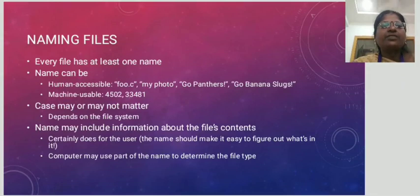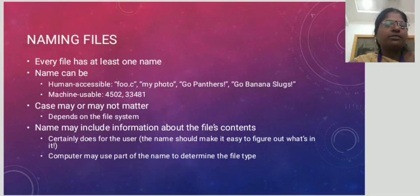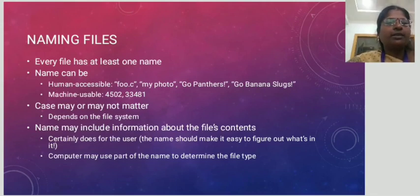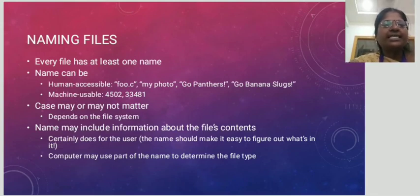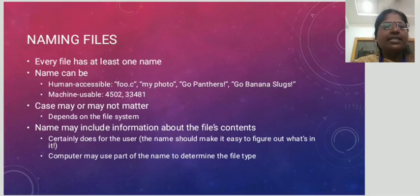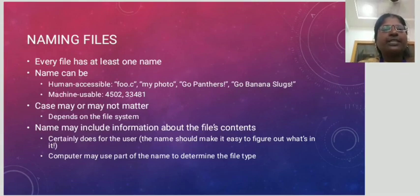Naming files: every file has at least one name. The name can be human accessible or machine accessible. Human accessible names include things like 'my file', 'first_program.c', or 'myfile.documents'. Machine usable names are numbers. Case may or may not matter, depending on the file system. The name may include information about the file's contents — certainly for the user, and the computer may use part of the name to determine the file type.